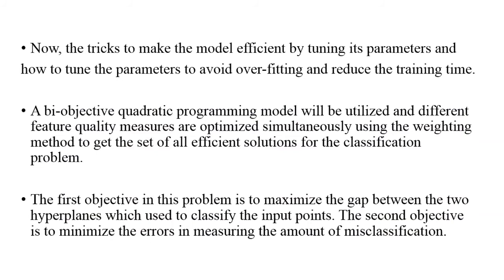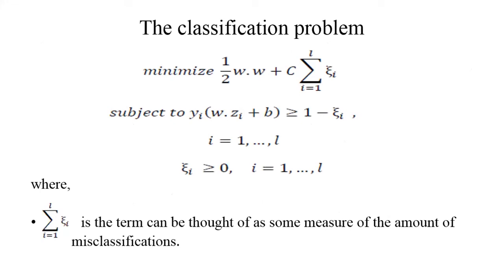Now, the tricks to make the model efficient by tuning its parameters and how to tune the parameters to avoid overfitting and reduce the training time. A bi-objective quadratic programming model will be utilized and different feature quality measures are optimized simultaneously using the weighting method to get the set of all efficient solutions for the classification problem. The first objective in this problem is to maximize the gap between the two hyperplanes which used to classify the input points. The second objective is to minimize the errors in measuring the amount of misclassification. The summation of xi is the term that measures the amount of misclassification.